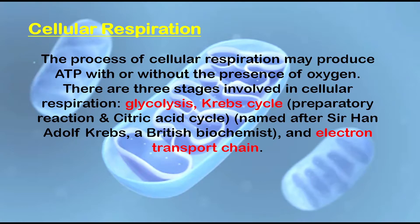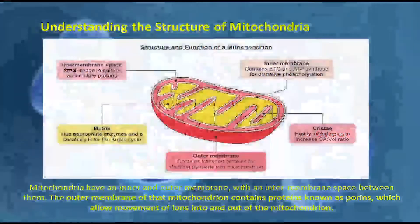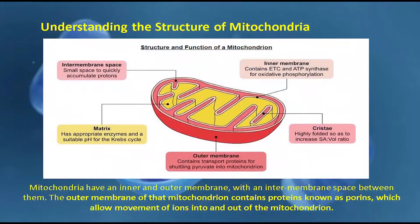The citric acid cycle was named after Sir Hans Adolf Krebs, a British biochemist. The last stage is the electron transport chain, or ETC. Let us first understand the structure of mitochondria before we proceed to the three stages of cellular respiration.